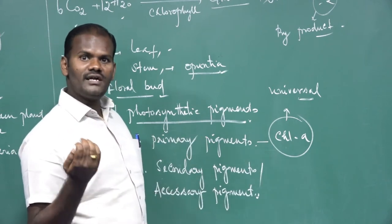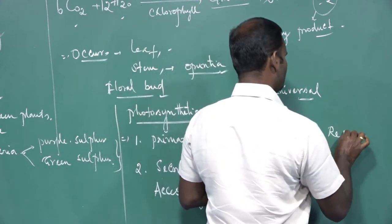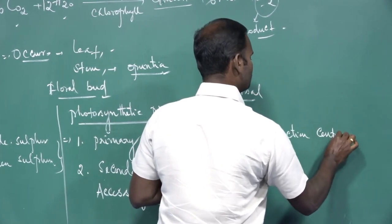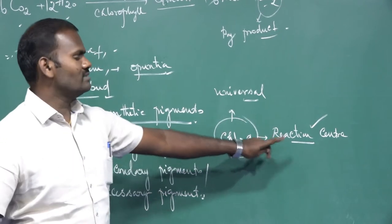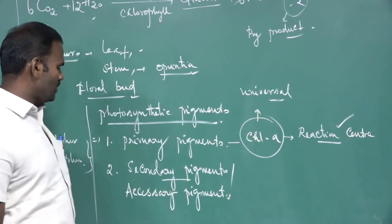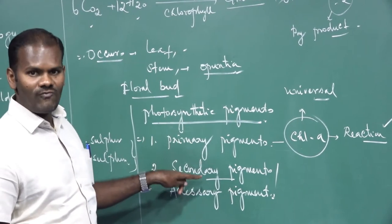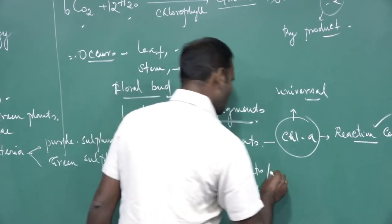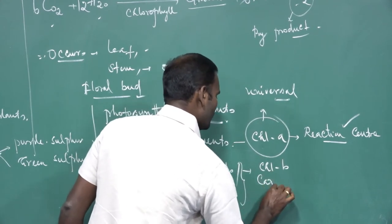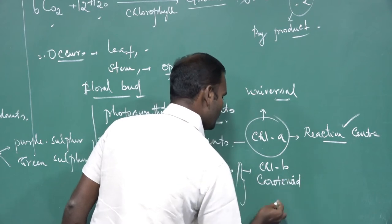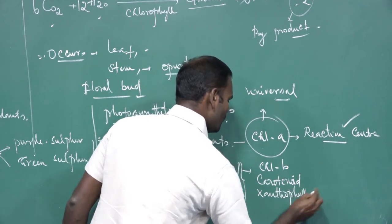Chlorophyll A traps solar energy and converts it into chemical energy, acting as a reaction center. Primary pigment is also called the reaction center. Other than chlorophyll A, all other pigments are called accessory pigments or secondary pigments. For example: chlorophyll B, carotenoid, xanthophyll, and phycobilins.